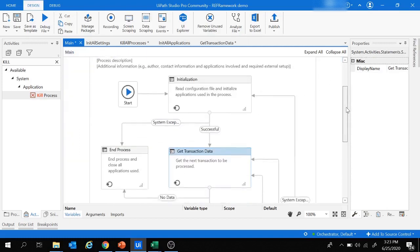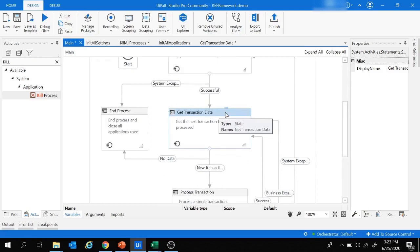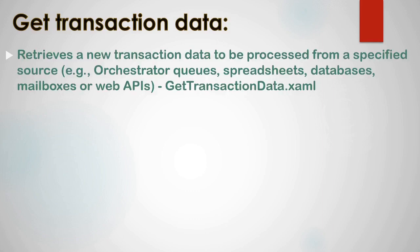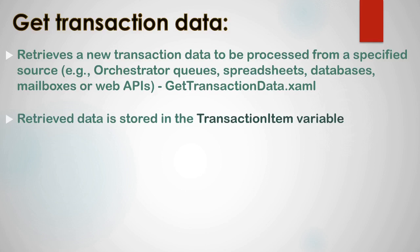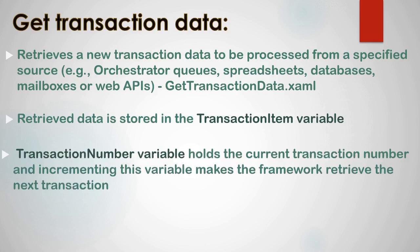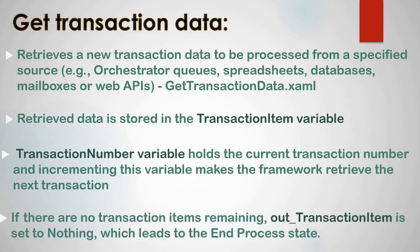To recap the Get Transaction Data state: it retrieves new transaction data from sources such as orchestrator queues, spreadsheets, databases, mailboxes, or web APIs, using activities inside the GetTransactionData workflow. The retrieved data is stored in the transaction item variable. The transaction number variable holds the current transaction number, and incrementing it makes the framework retrieve the next transaction. When no items remain, out_TransactionItem is set to Nothing, leading to End Process.